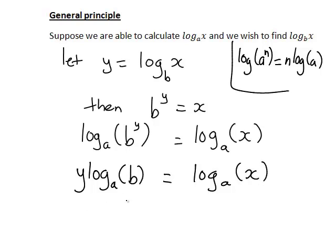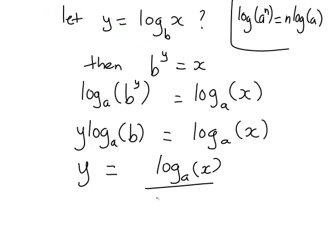And that, the right hand side for now, still stays the same. So y times log base a of b equals log base a of x. And y is what we're actually wanting to find. Now to find y, we can simply cancel log base a of b from the left hand side by dividing both sides by log base a of b, which tells us that y is actually log base a of x divided by log base a of b.